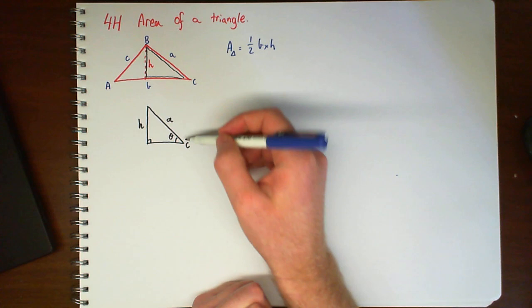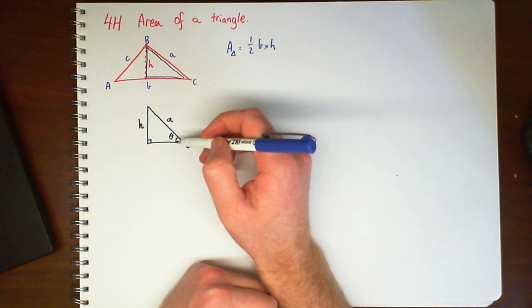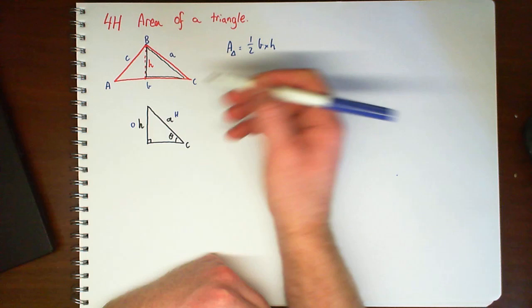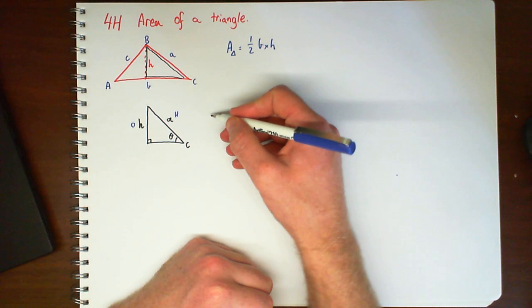Now if I was generally speaking working this out using our SOHCAHTOA, sine, cosine and tan ratios, what I could have is an opposite side and the hypotenuse. So if I want to work out what the height is,